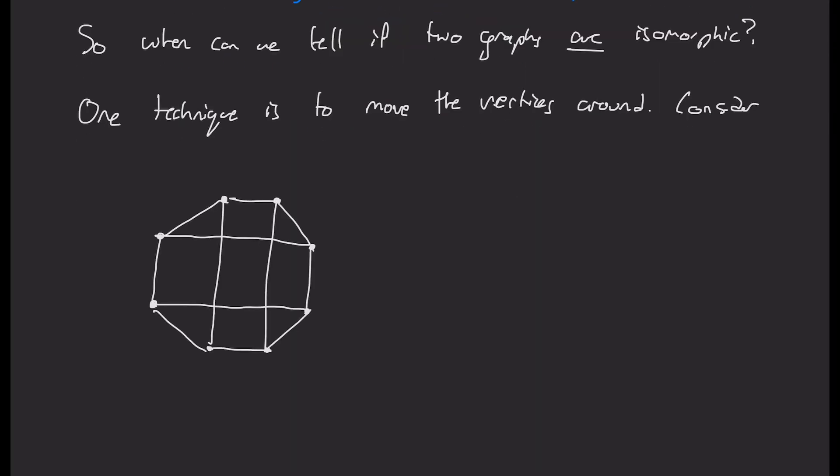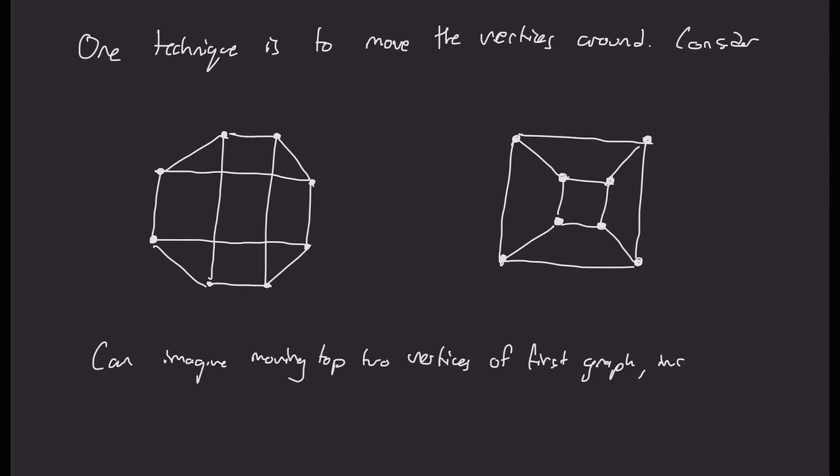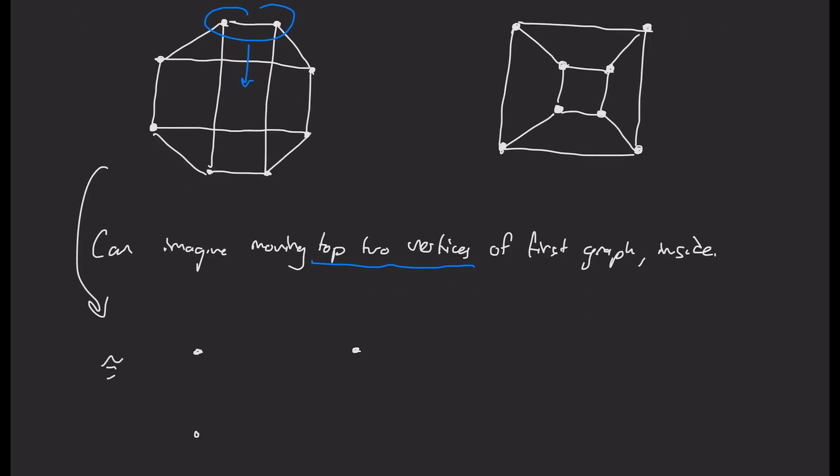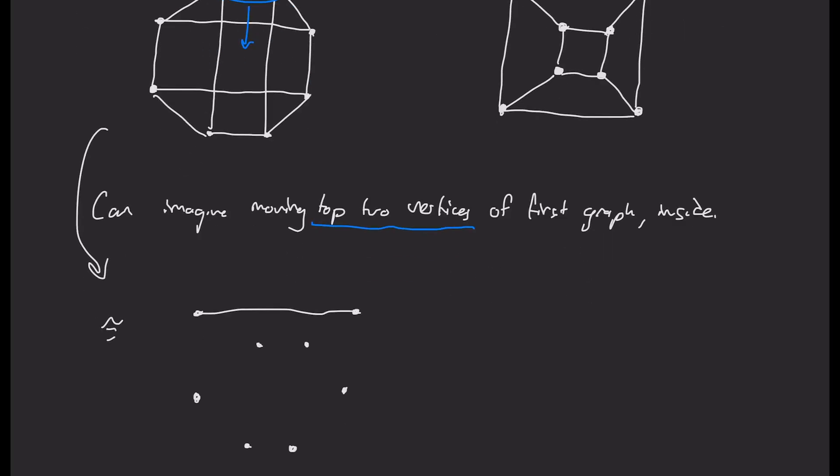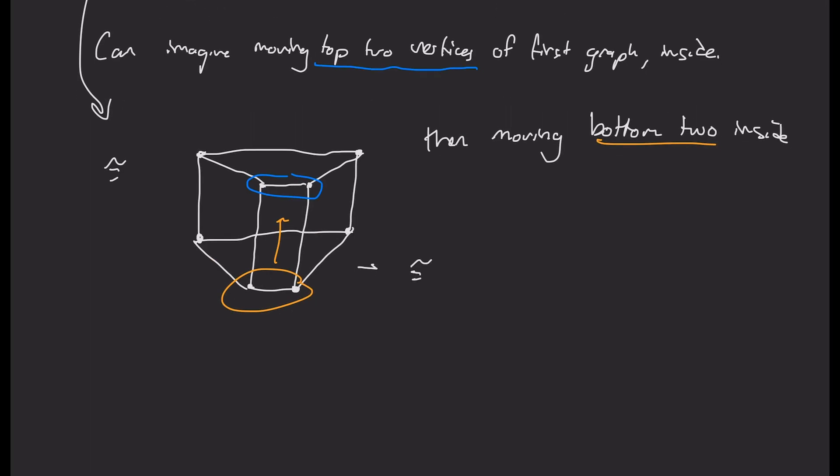So let's take a look at these two graphs. And you can imagine moving the top two vertices of the first graph inside that rectangle in the middle. If we do that, it looks something like this. So all the edges kind of follow the vertices. Okay, but then we can also do the same thing with the bottom two, and we can move them inside that rectangle as well. And if we do that, we get something like this.